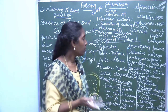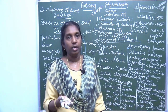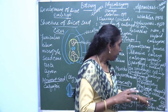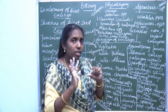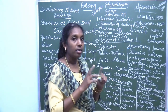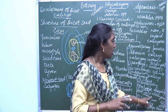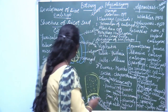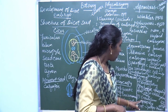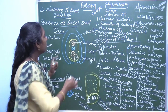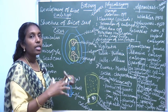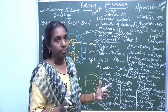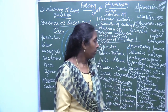The second type is diplospory, otherwise called generative apospory. In this type, the megaspore mother cell does not undergo meiotic division. It produces a diploid embryo sac directly from the megaspore mother cell. This embryo sac is formed without meiotic division and it produces the embryo from the nucellus or integument. Example: Taraxacum.